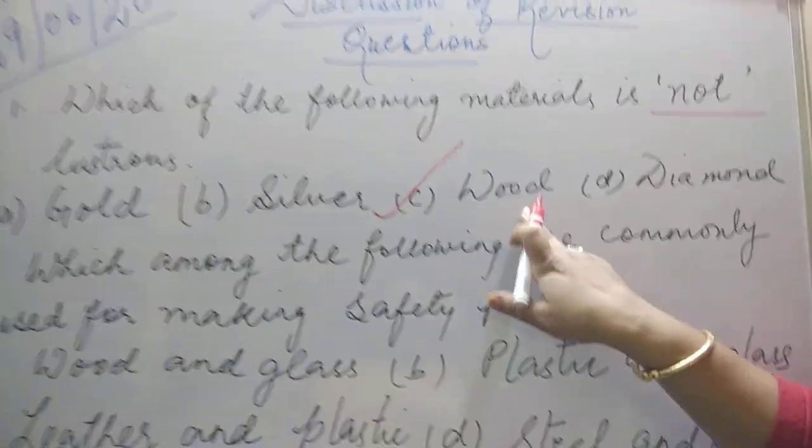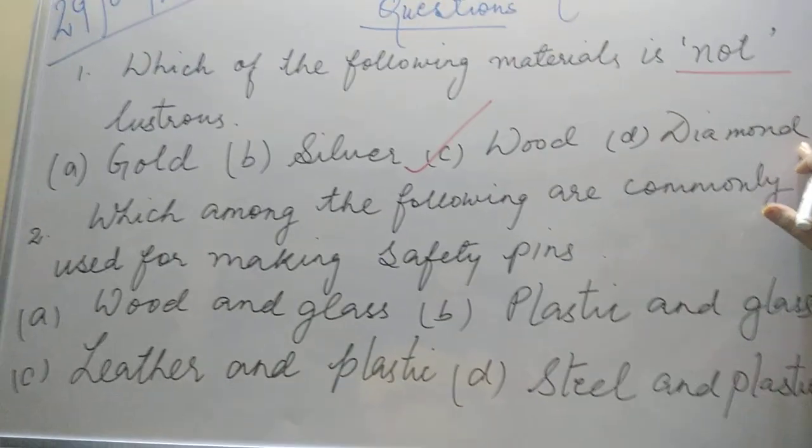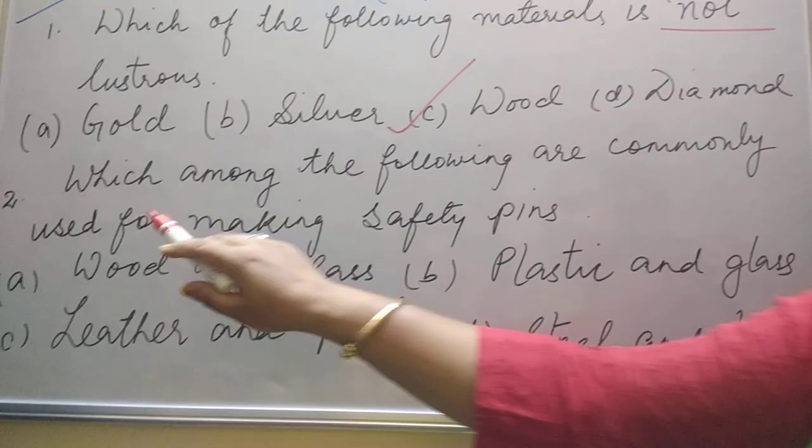Wood. Wood is not having lustrous part, so the option will be wood. And if I go with diamond, diamond is also having lustrous, that is shine.